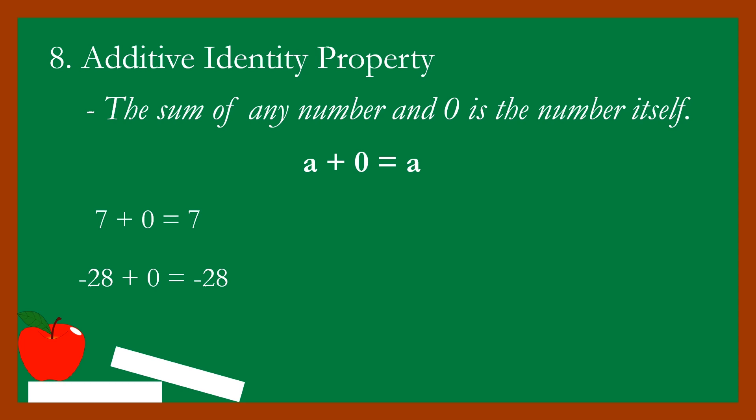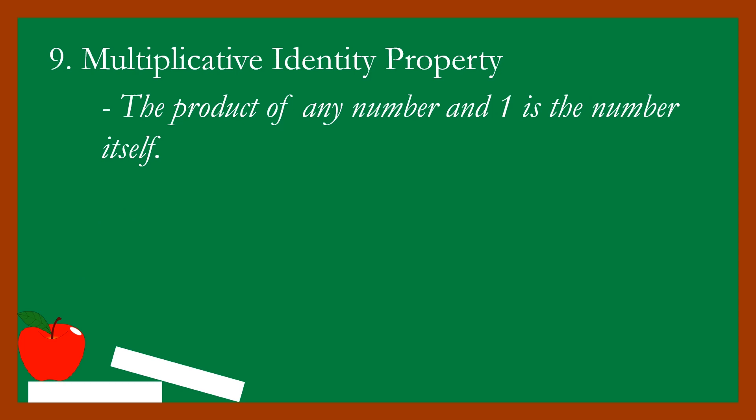Property number nine: the multiplicative identity property. The product of any number and one is the number itself. The notation is: a times one equals a. For example, two times one equals two. Another example: negative twelve times one is equal to negative twelve. Any number multiplied by one gives itself.